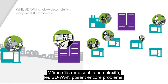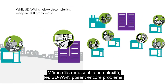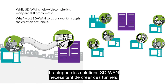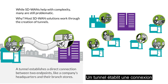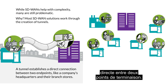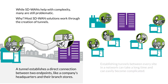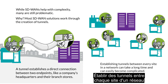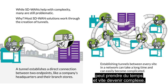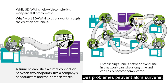While SD-WANs help with complexity, many are still problematic. Most SD-WAN solutions work through the creation of tunnels. A tunnel establishes a direct connection between two endpoints, like a company's headquarters and their branch stores. Establishing tunnels between every site in a network can take a long time, and can easily become complicated. This is where problems can occur.